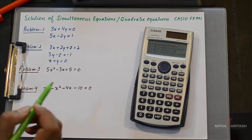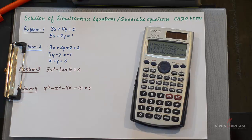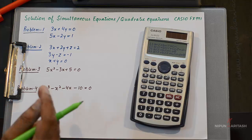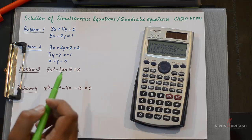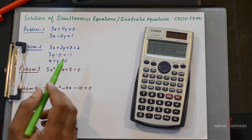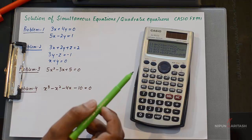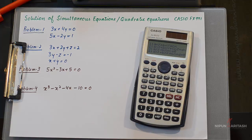I've written down examples of all the equations here. The first one is simultaneous equations for two variables. The second option is simultaneous equations for three variables. The third is a quadratic equation of degree 2, and the fourth is a quadratic equation of degree 3.